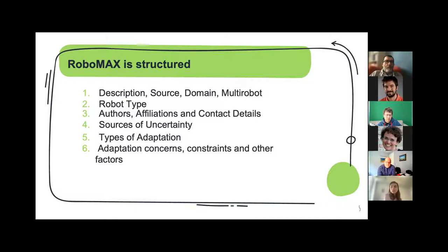In addition to our predefined options, we also allow users to add extra data that doesn't fit our current classification. Observing this extra information can bring to our attention features worth adding to the exemplar, and we can eventually enrich our questionnaire with more options — it's a continuous process. We are also working on incorporating the concerns of well-known robotic standards into our questionnaire.